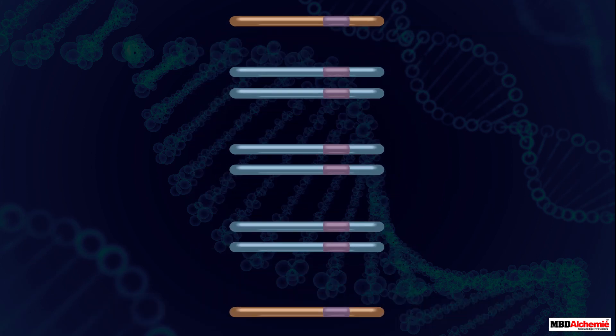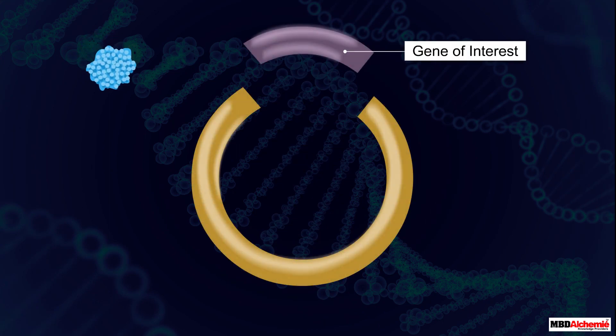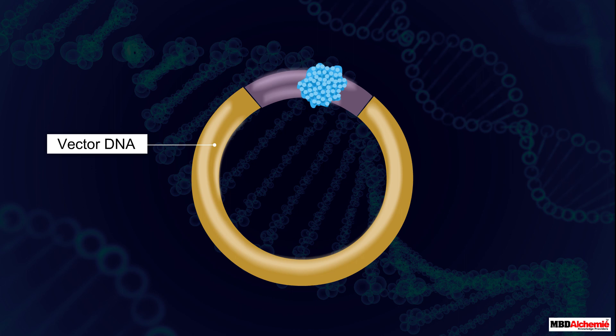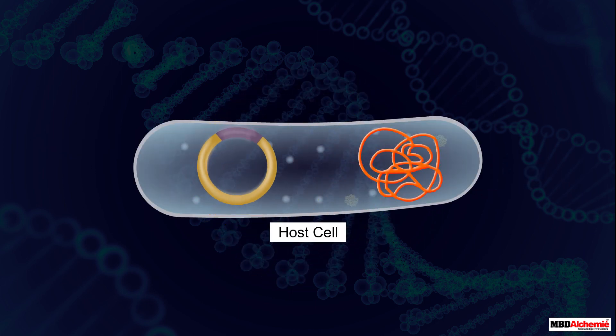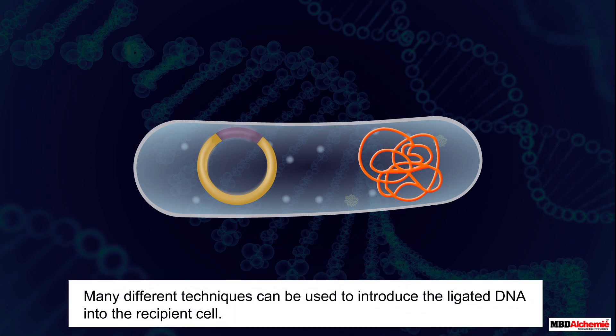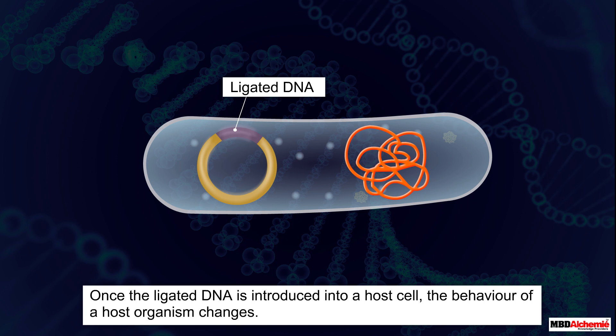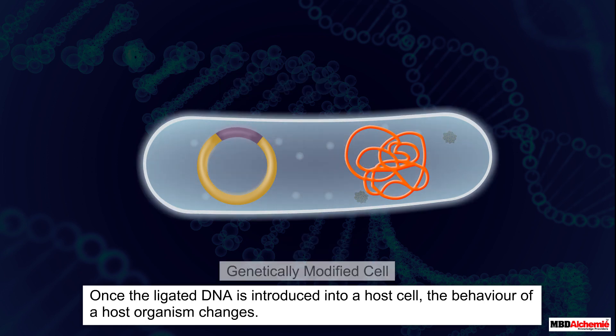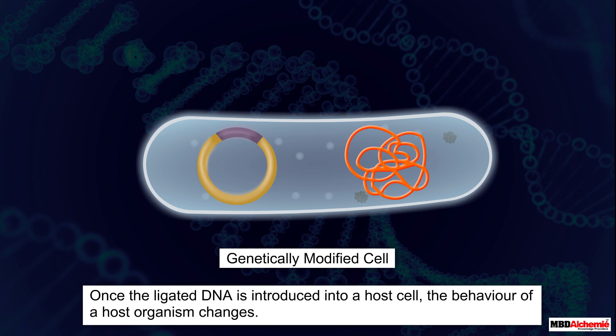Now once the gene of interest is amplified, it is ligated with a vector. This in turn is inserted into a host cell for further cloning. Many different techniques can be used to introduce the ligated DNA into the recipient cell. Once the ligated DNA is introduced into the host cell, the host organism becomes genetically modified.